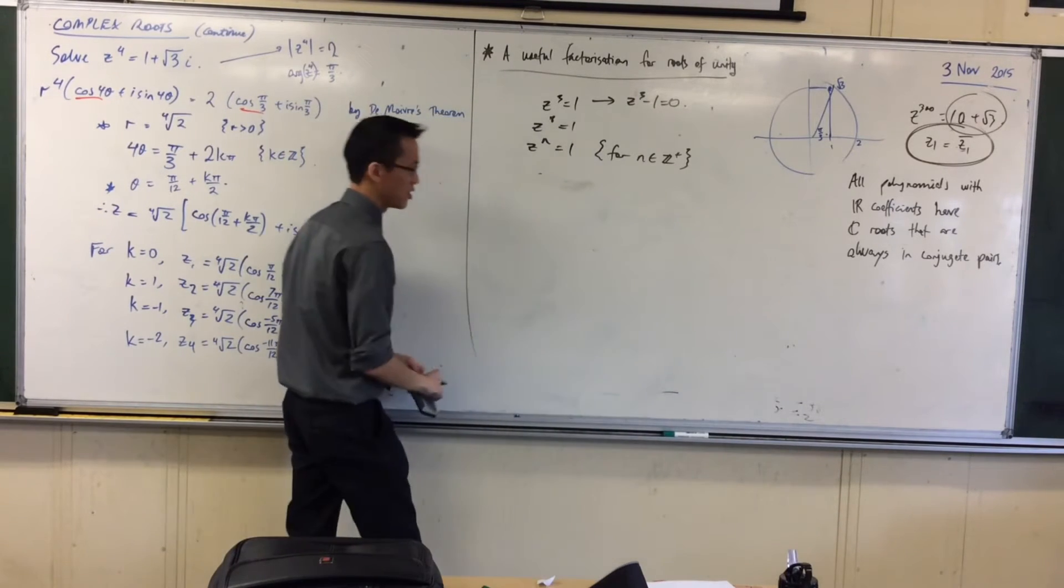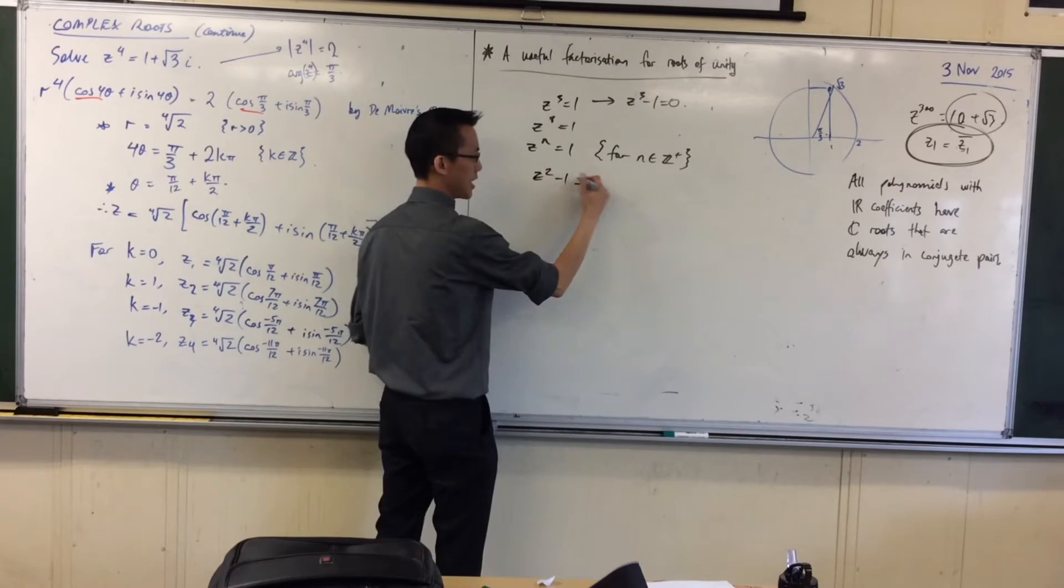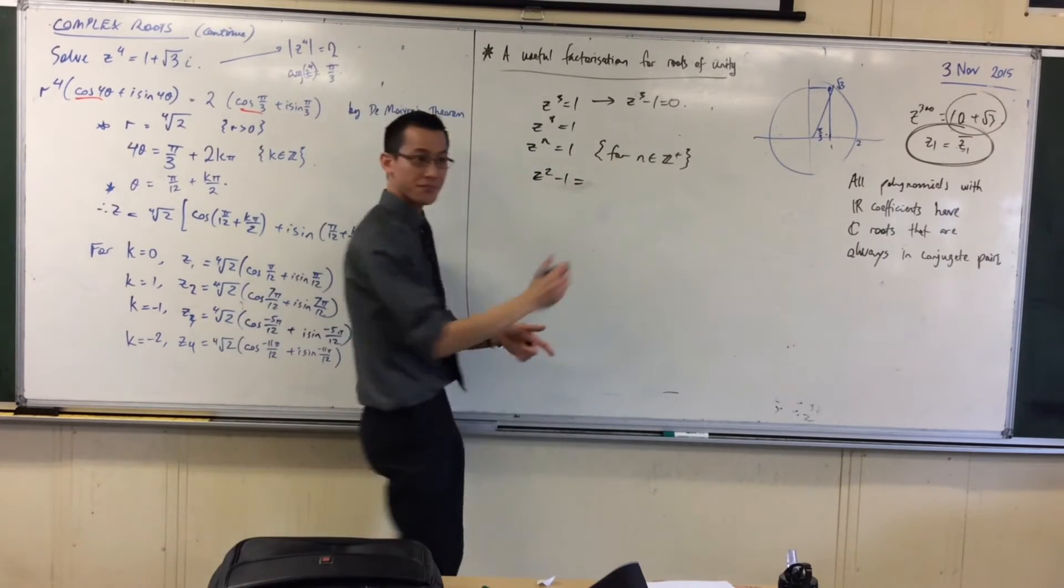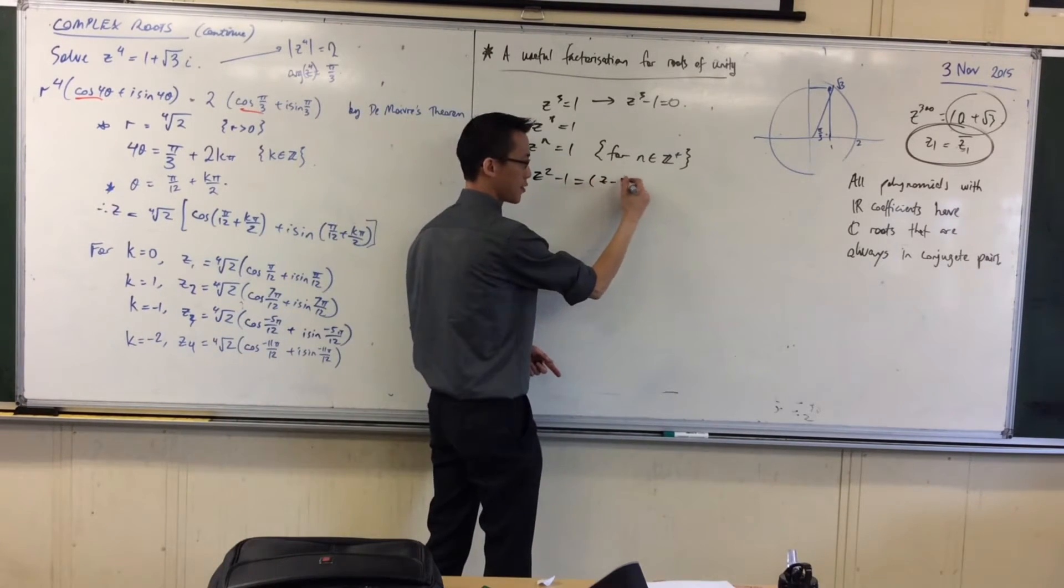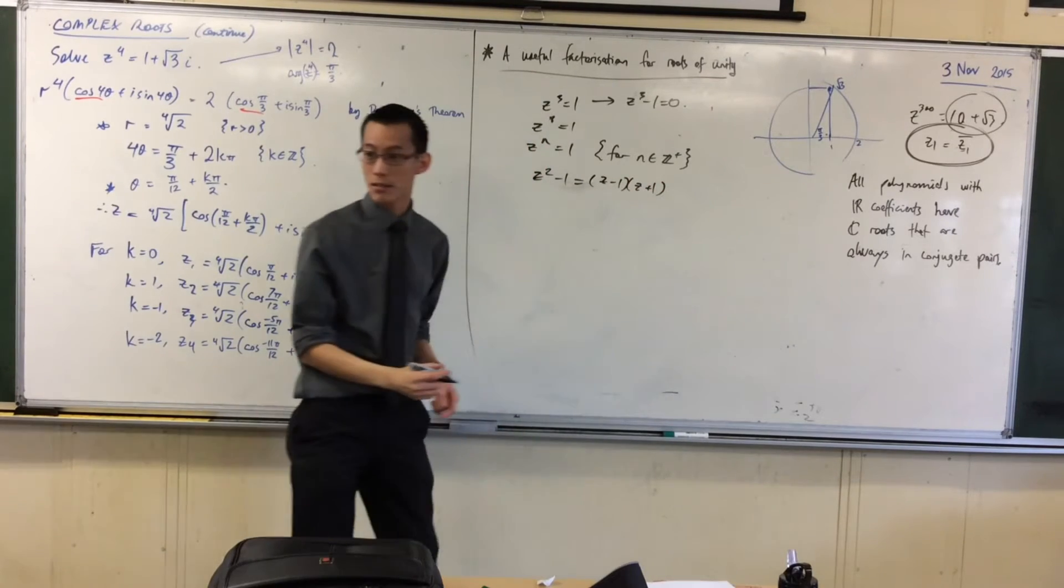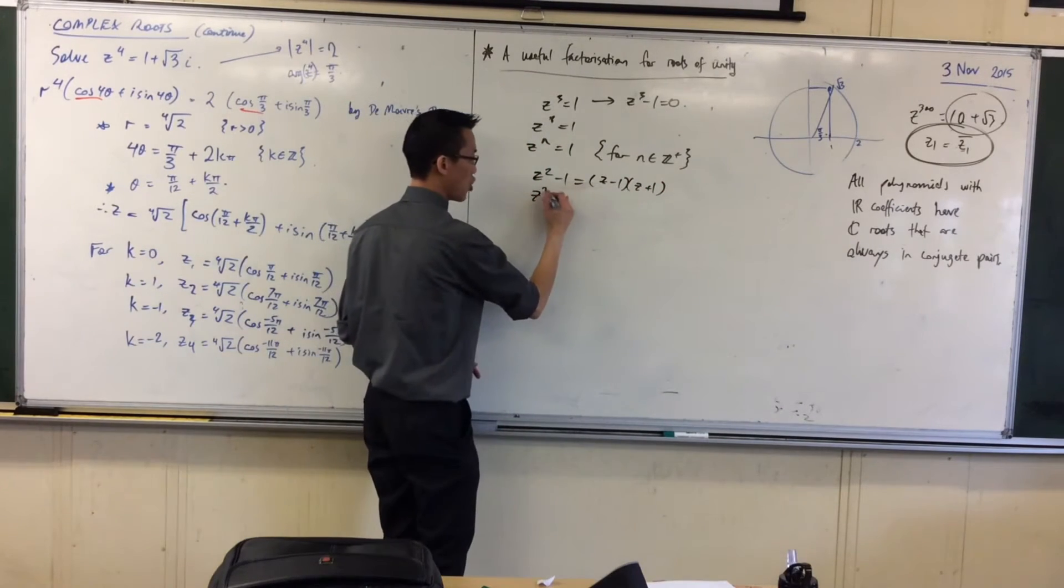except for the fact that you can factorize it. I want you to just write down those factorizations for a second. z squared take away 1. What's the factorization? Difference of squares, right?